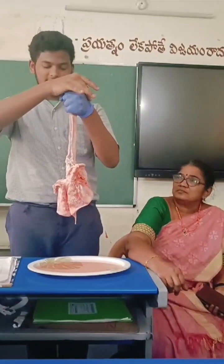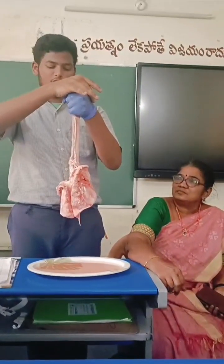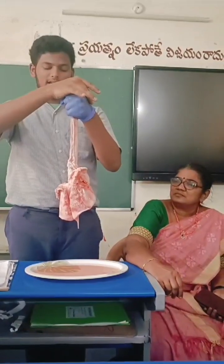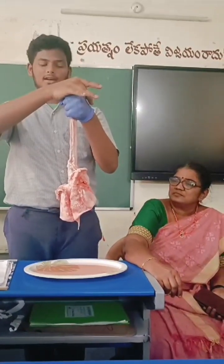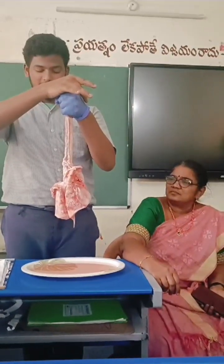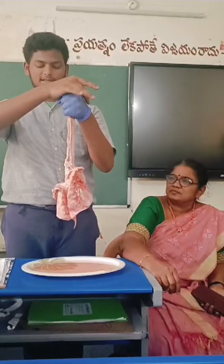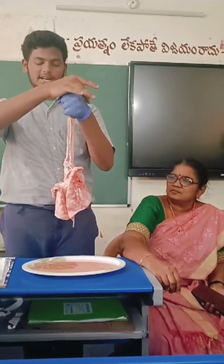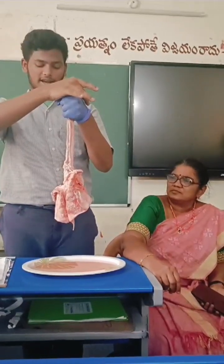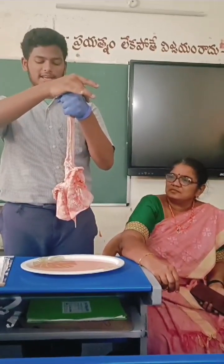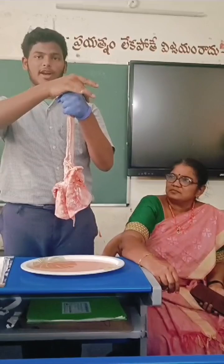For comparison, in adult human beings, the right lung weighs 630 grams and the left lung weighs 570 grams.